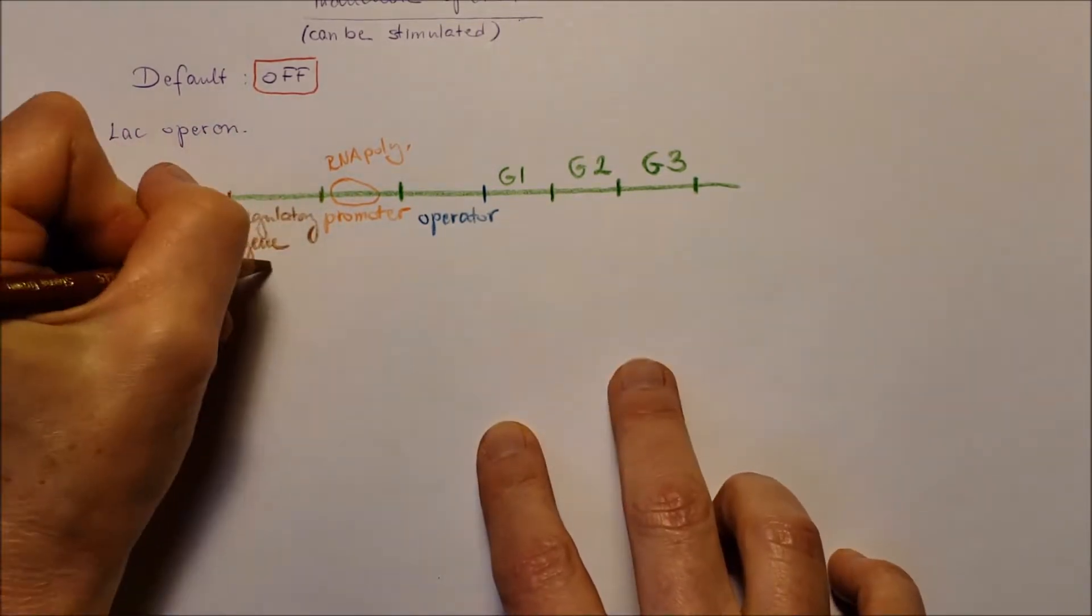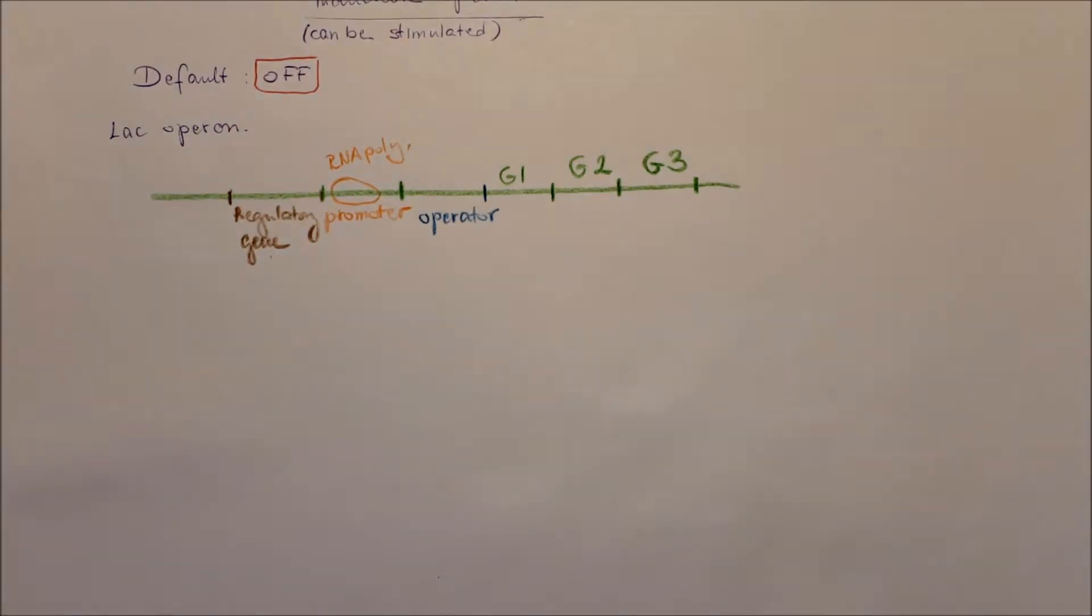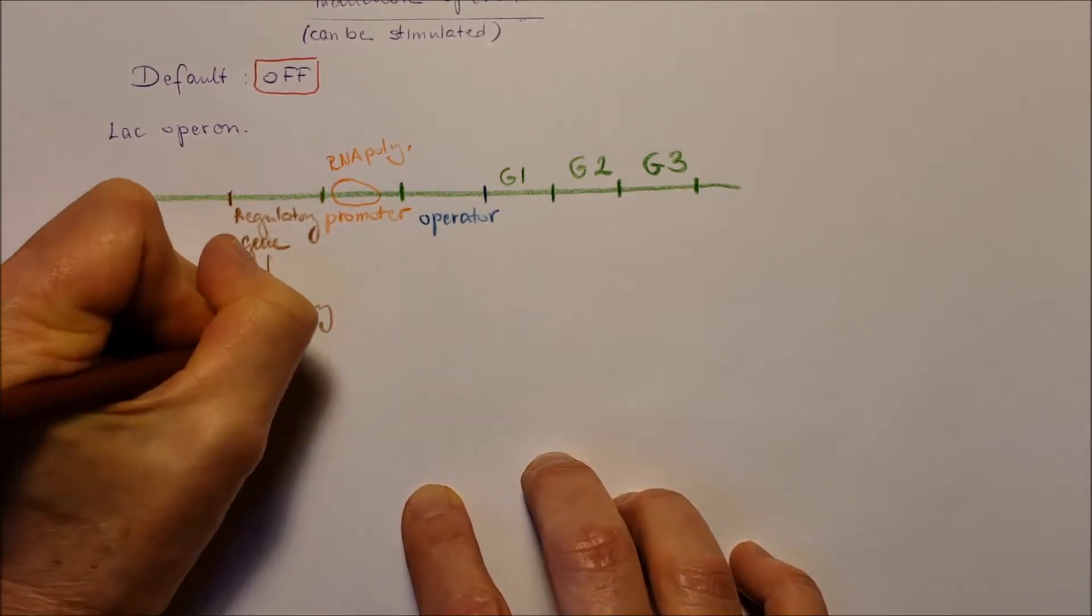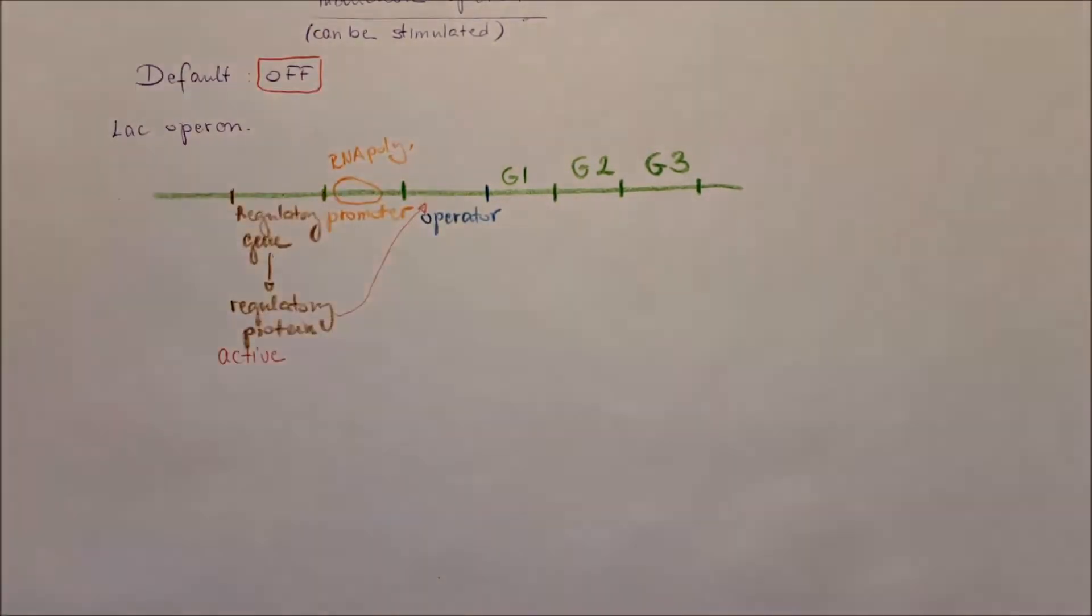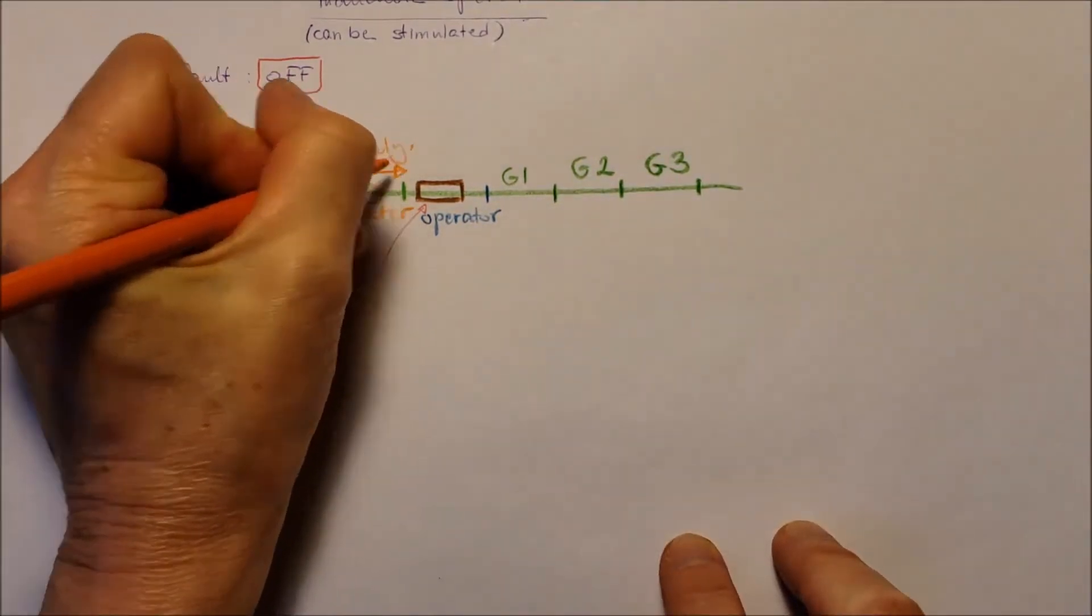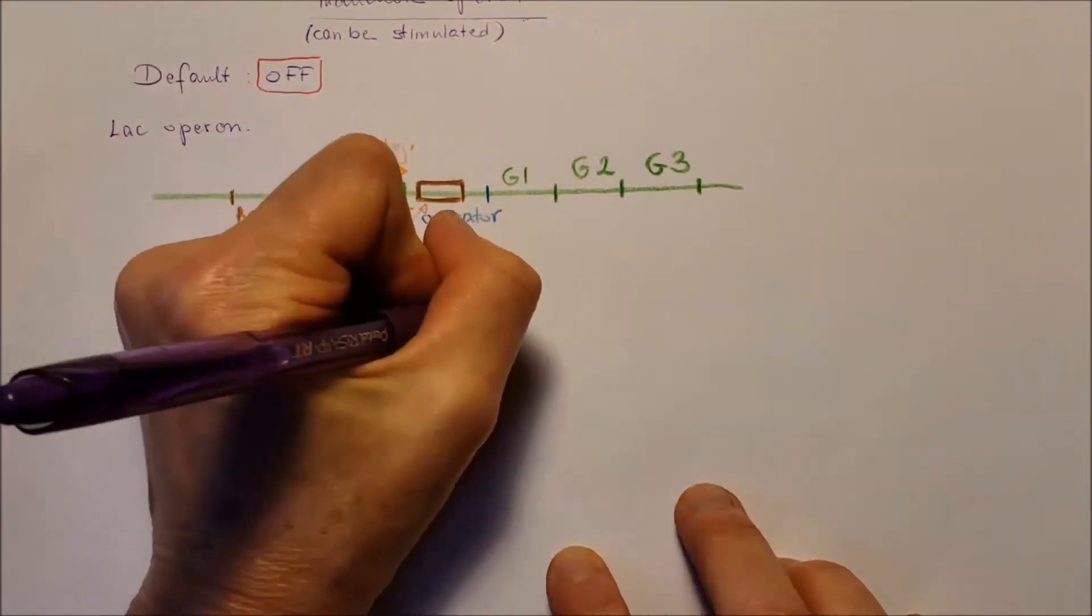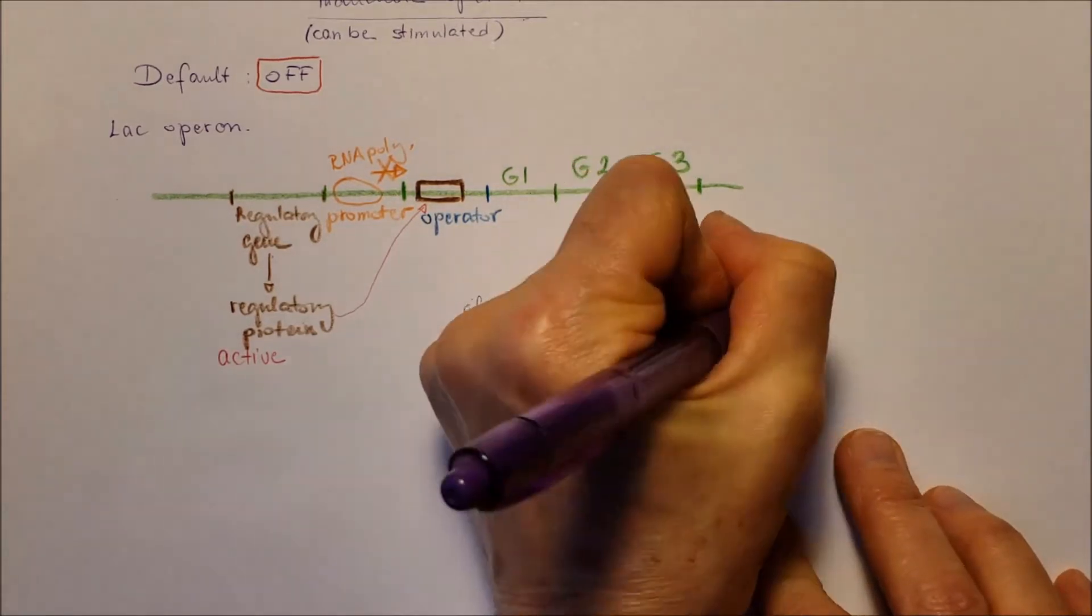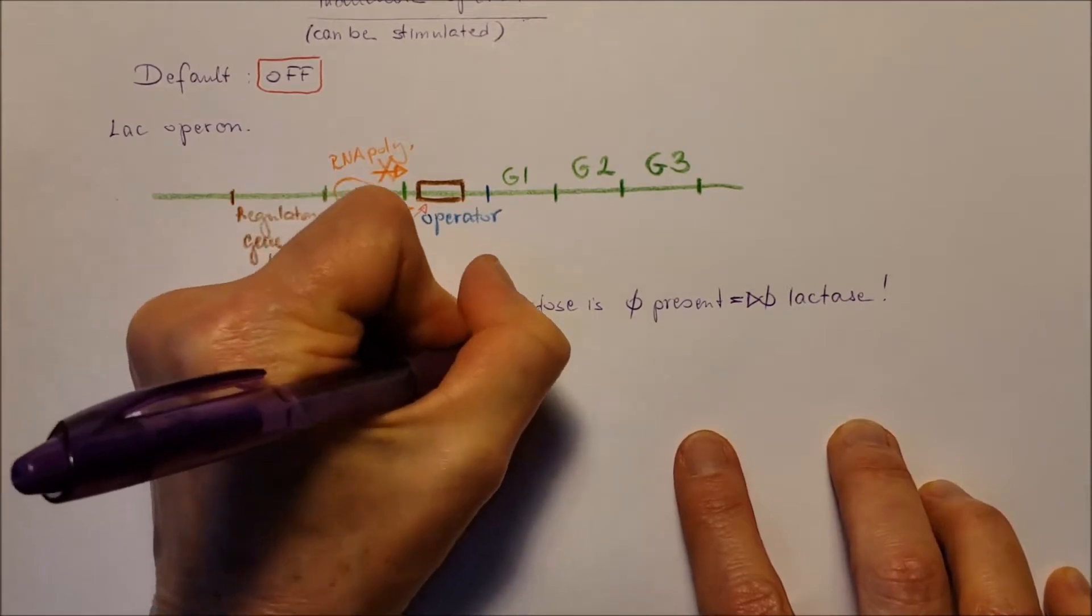Before the promoter is the regulatory protein that produces a regulatory protein that is active by default. It's going to bind to the operator section, so it's always going to inhibit the RNA polymerase to transcribe the genes. If lactose is not present, there's no need of lactase, the enzyme, to break down the lactose. How clever is that?